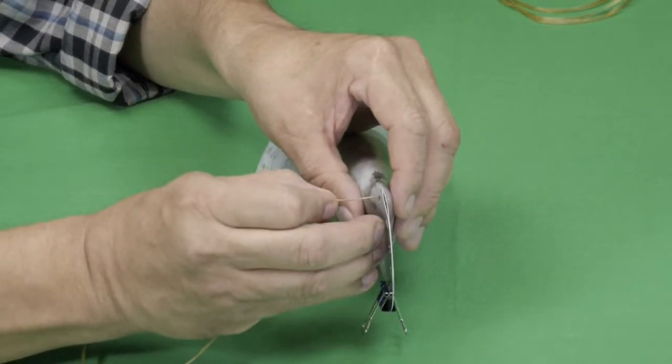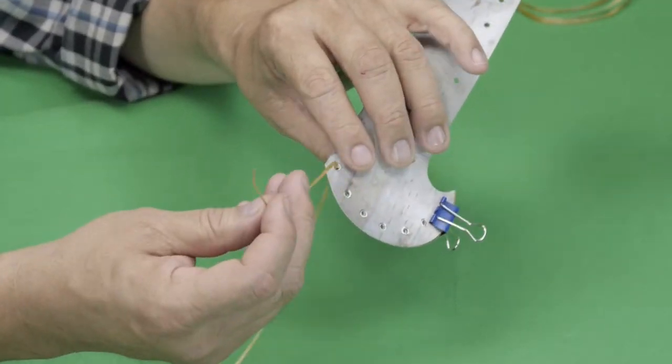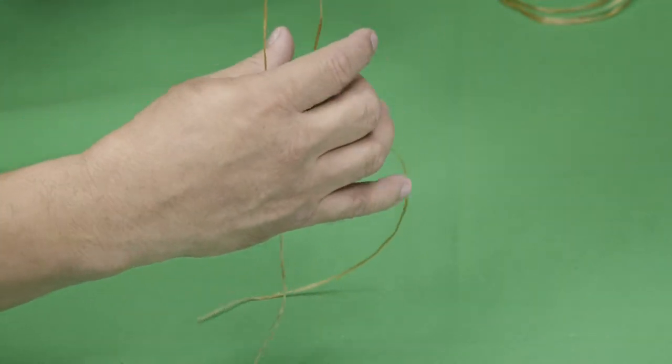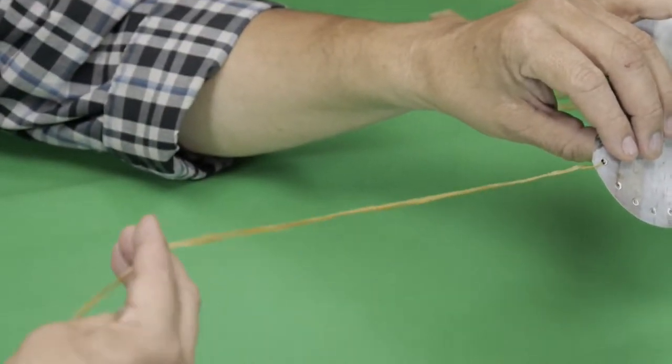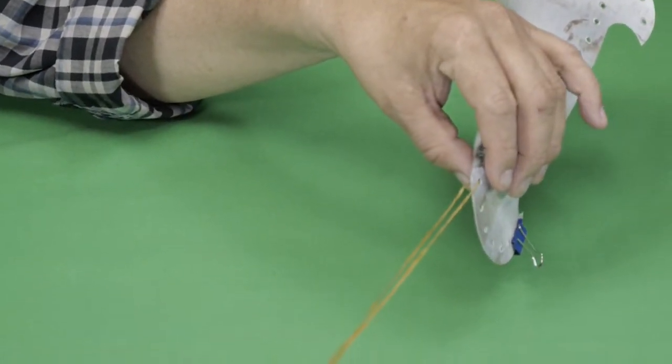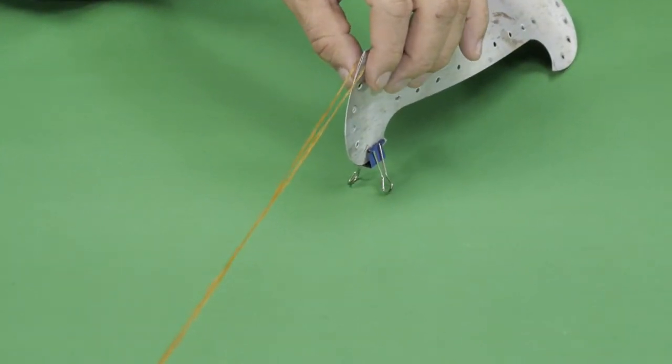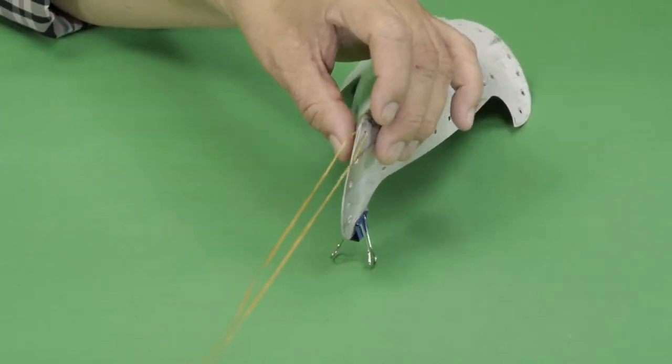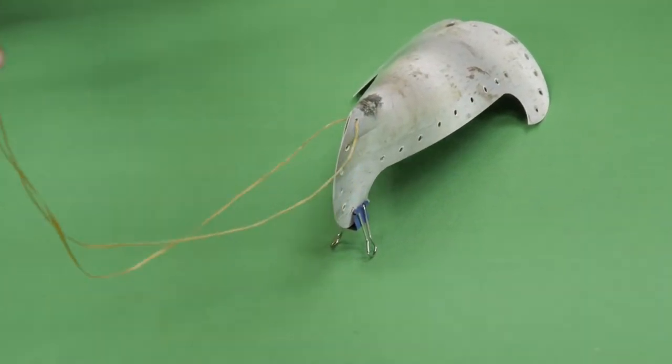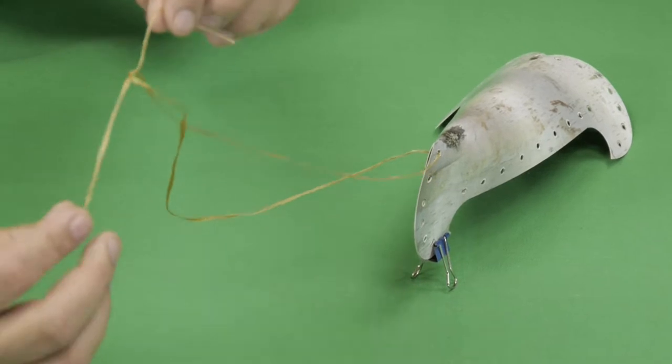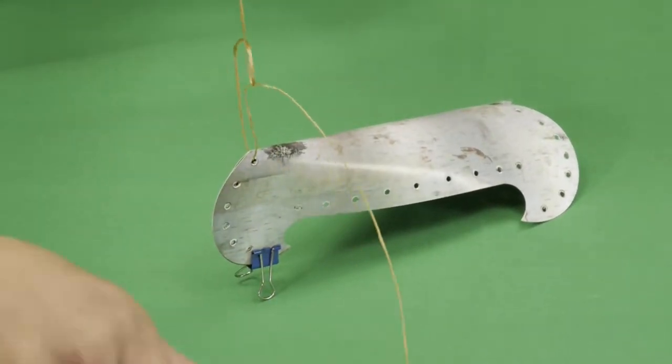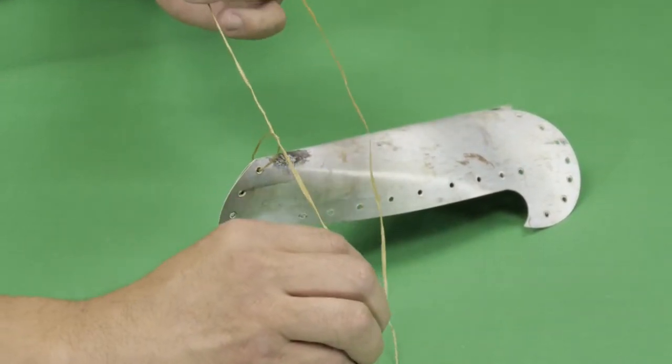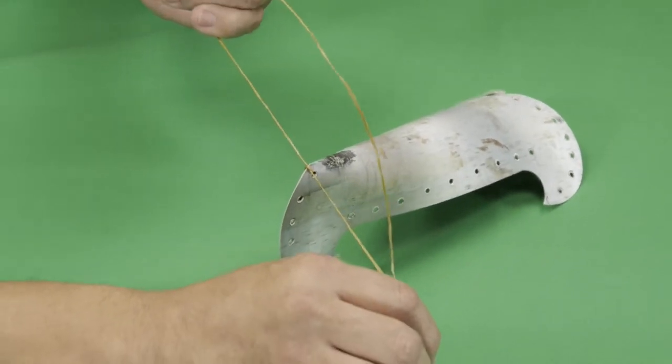Use your sinew lacing and string through the bottom of the canoe, pulling it through so the ends meet to the same length. Tie one knot at the bottom corner of the hull and pull to a snug fit with the same length of sinew on both sides.